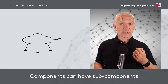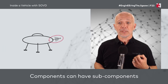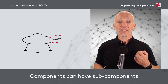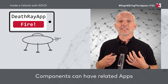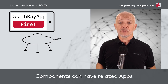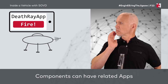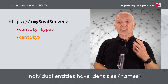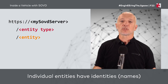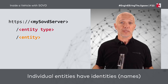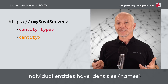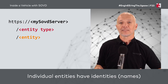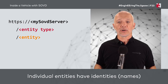Components can have sub-components — so a spaceship has a ray gun. And components can have related apps — here is our death ray app, which we can use to fire the ray gun. Each entity needs to be identifiable. So we talked about area 51, the spaceship, the ray gun, and the ray gun app — they all have some kind of identity that lets us identify which entity we want to work with in the API.